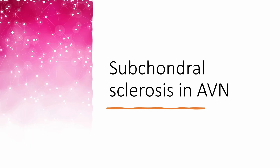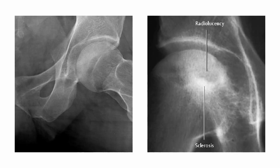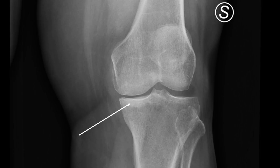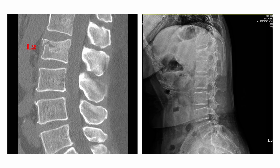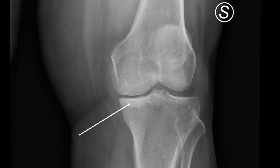Subchondral sclerosis is also seen in avascular necrosis. In stage 2 of AVN, x-rays highlight areas of dense bone, signifying the onset of bone death or even collapse, depending on the stage. Similar subchondral sclerosis can be detected in cases of insufficiency fractures, similar to a compression fracture in the vertebral body. Depending on the stage, it can signify an acute compression fracture or a secondary reactive process.